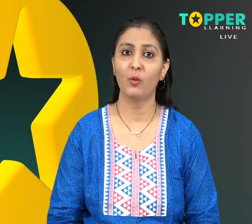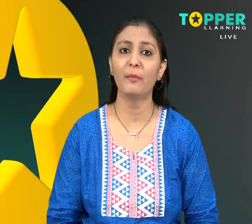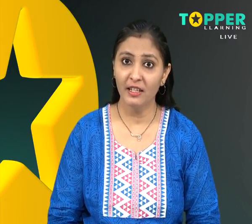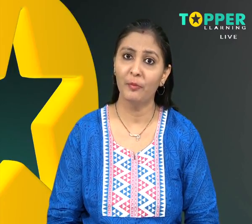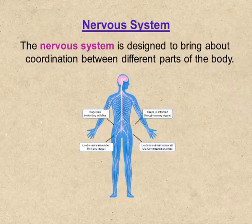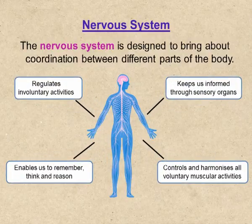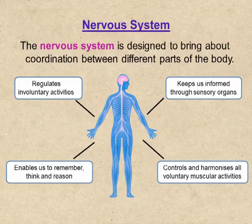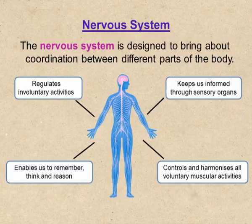After studying about control and coordination, our immediate question is: how is coordination brought about? There must be something which regulates the synchrony between different activities. This synchrony is regulated by the nervous system. The nervous system is designed to bring about coordination between the different parts of the body. The nervous system keeps us informed about the outside world through the sense organs, controls and harmonizes all voluntary muscular activities, enables us to remember, think and reason out problems, and regulates involuntary activities such as breathing and beating of the heart.